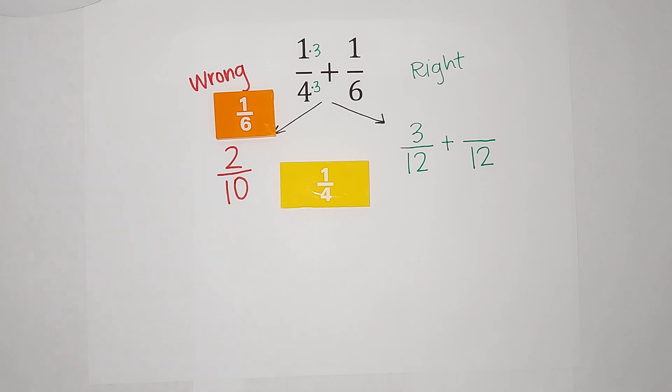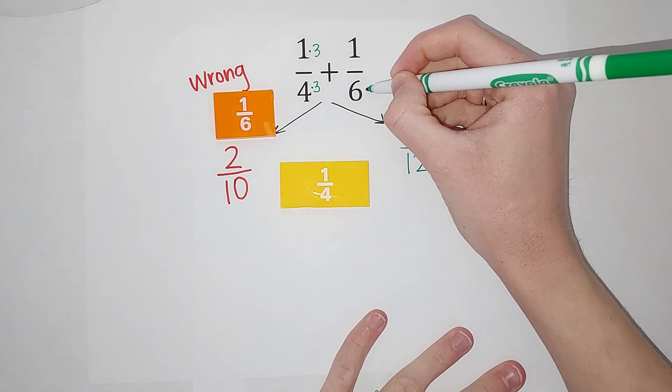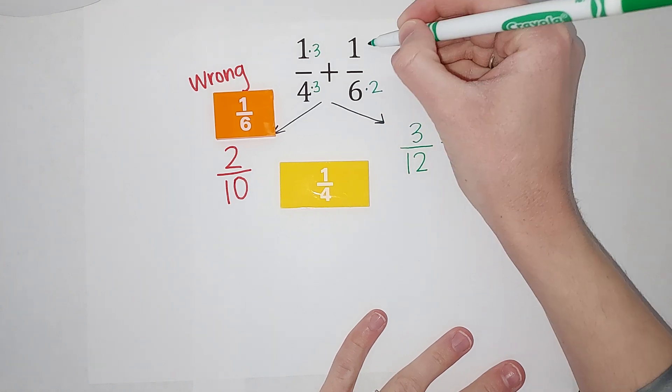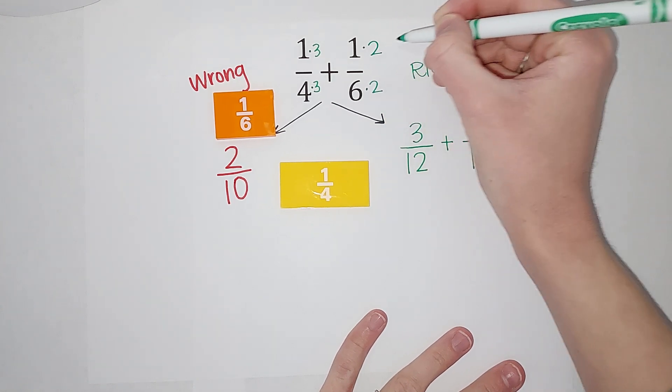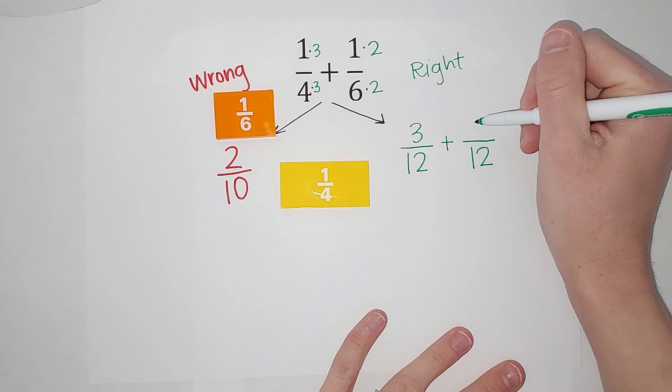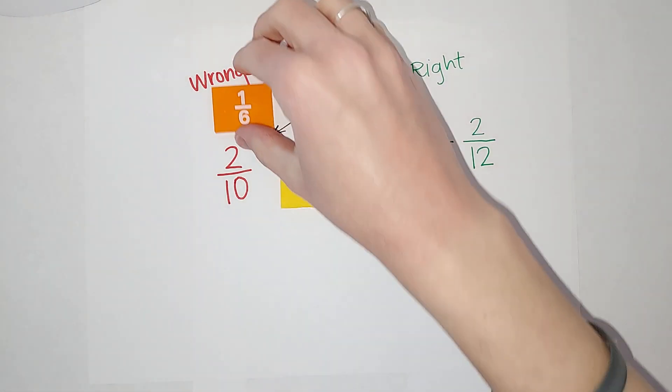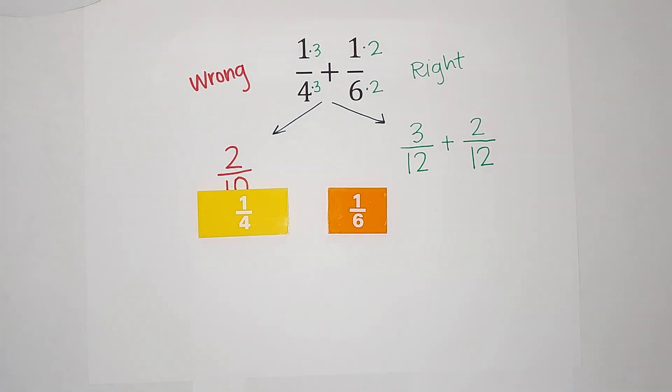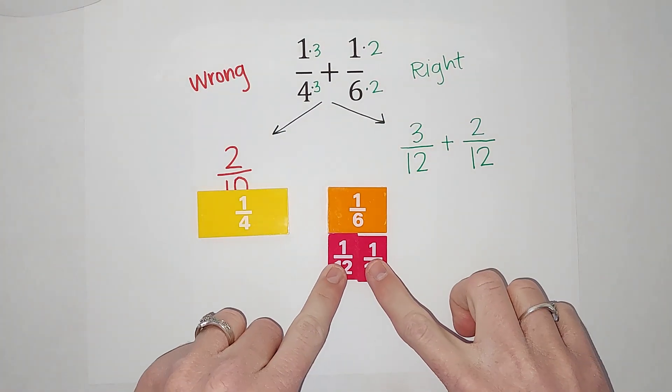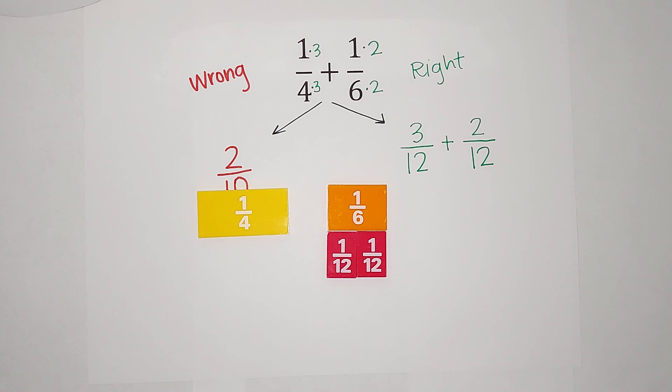Now the 1/6. What do I multiply six by to get 12? Well, I multiply it by two, right? But I got to multiply the top as well. So it's 2/2. So one times two gives me two. Six times two gives me 12. So I am saying that 1/6 is equal to 2/12, and we are looking pretty good there.